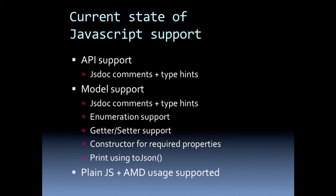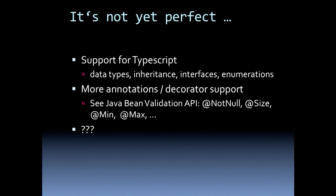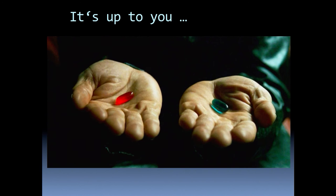What is the current state of JavaScript support in Swagger CodeGen? Right now the API is supported, the model is supported. You have JavaScript doc comment support and type hints, enumeration support, getter/setter support, and a constructor for required properties. You are able to dump output to the console, and you can use plain JavaScript or AMD. It's not yet perfect — I will probably add TypeScript support, or if you have other ideas, please let me know. It's up to you whether you call jQuery-style or use Swagger directly.